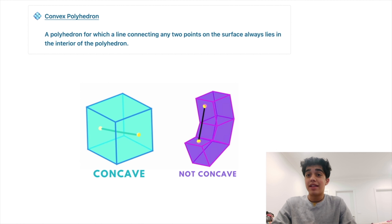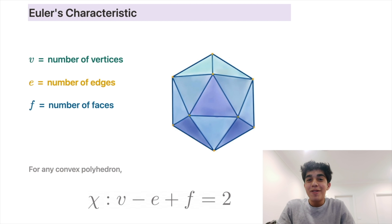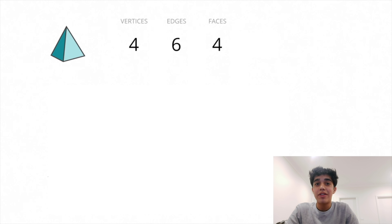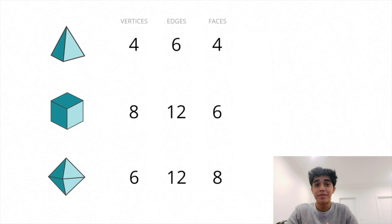First, we must understand what a convex polyhedron is. A convex polyhedron is simply a polyhedron for which a line connecting any two points on the surface always lies in the interior of the polyhedron. Euler's characteristic tells us that for any convex polyhedron, vertices minus edges plus faces is always equal to two. For example, a tetrahedron has four vertices, six edges, and four faces. A cube has eight vertices, 12 edges, and six faces. An octahedron has six vertices, 12 edges, and eight faces.